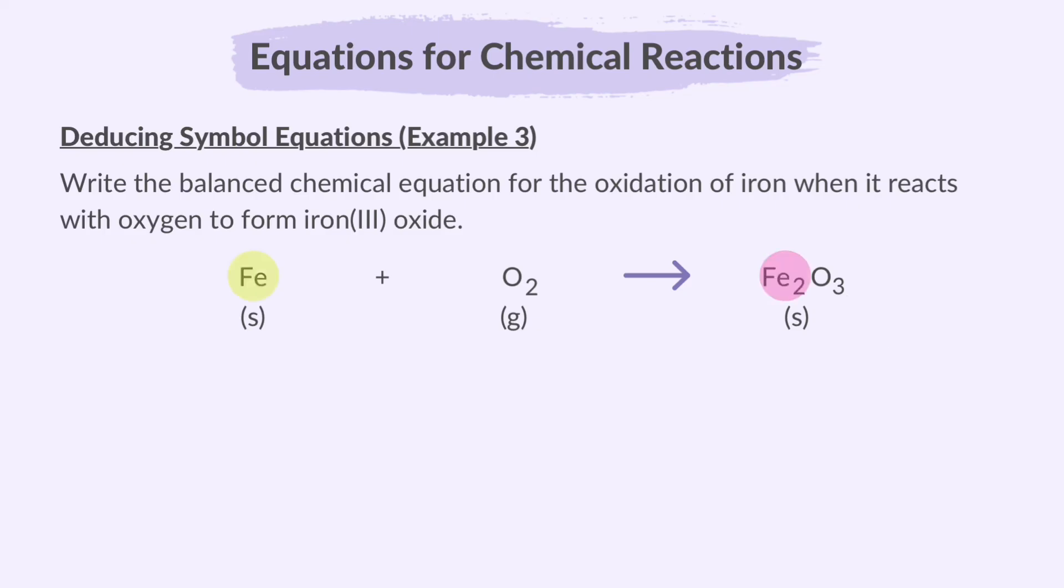Now, let's balance this equation. We have 1 iron on the left and 2 on the right. To balance, let's put a 2 in front of Fe on the left. Now, let's check oxygen. We have 2 oxygen atoms on the left, but we have 3 on the right. Let's put a 3 in front of the O2 on the left. Now there are 6 O's on the left side. If we put a 2 in front of the Fe2O3, then we will get 6 oxygen atoms on the right side as well. Let's double check. We have 2 iron atoms on the left side and 4 iron atoms on the right side. So let's change the number in front of the iron to 4. Now, the equation is balanced.